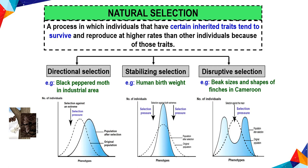The dotted line is an original population curve and the continuous line is a population curve after selection. For directional selection, the selection acts against one extreme phenotype and favors the other extreme phenotype. For stabilizing selection, the selection acts against both extreme phenotypes and favors an intermediate phenotype. For disruptive selection, the selection acts against the intermediate phenotype and favors both extreme phenotypes.